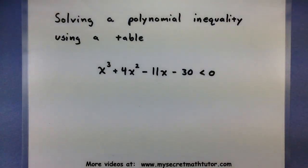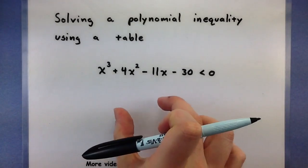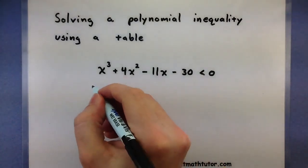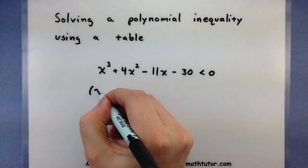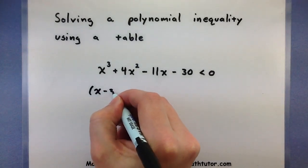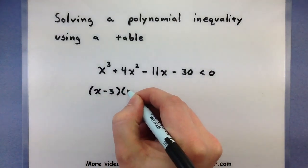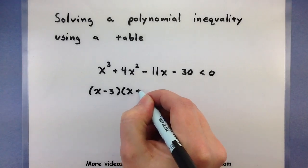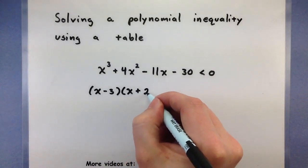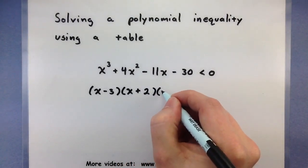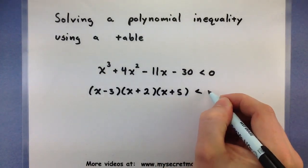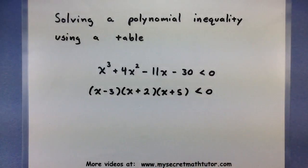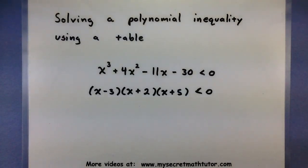The very first thing that you would want to do with a polynomial like this is break it down. I've already done this earlier, so I'll go ahead and list out all of the factors. If you're unfamiliar with the factoring process for polynomials, check out some of my other videos. So I have x minus 3 multiplied by x plus 2 multiplied by x plus 5, all less than zero.